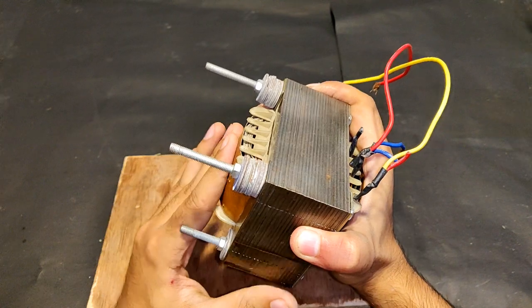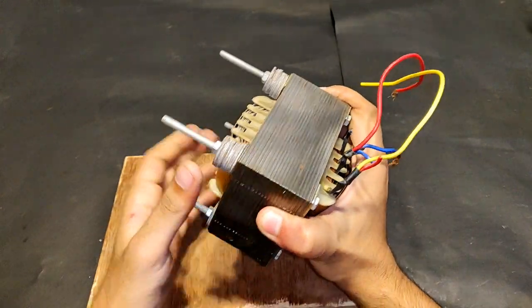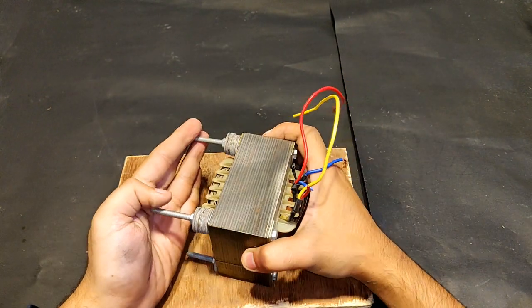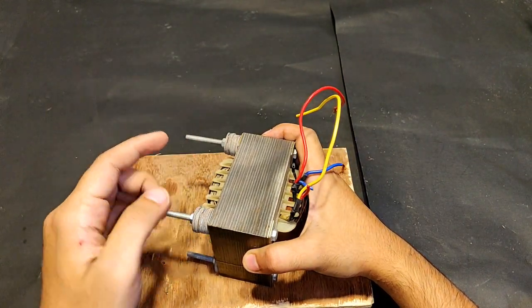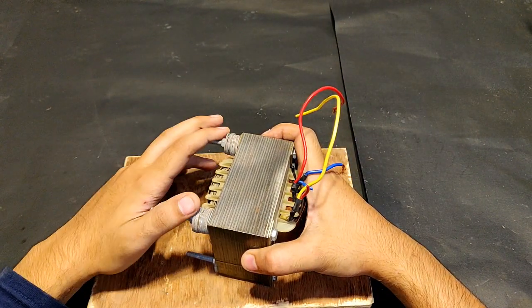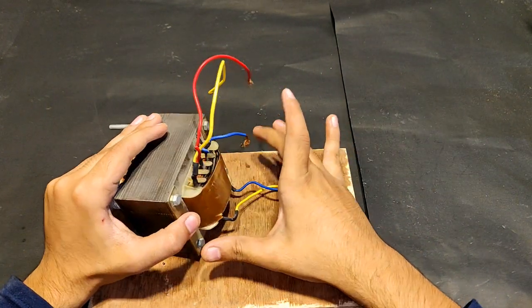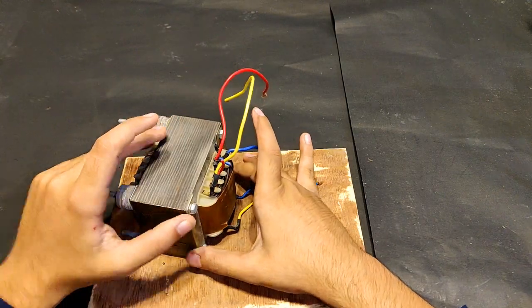The bolts that this transformer initially had got lost, so I used pretty longer ones. Although I could cut them with an angle grinder, it's not creating any problem so I'm going to stick with these. Let's do the continuity check on this transformer with the help of a multimeter.